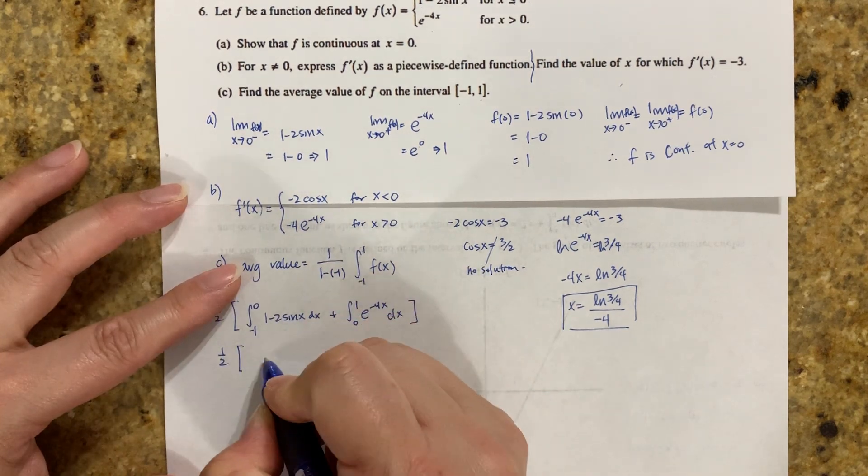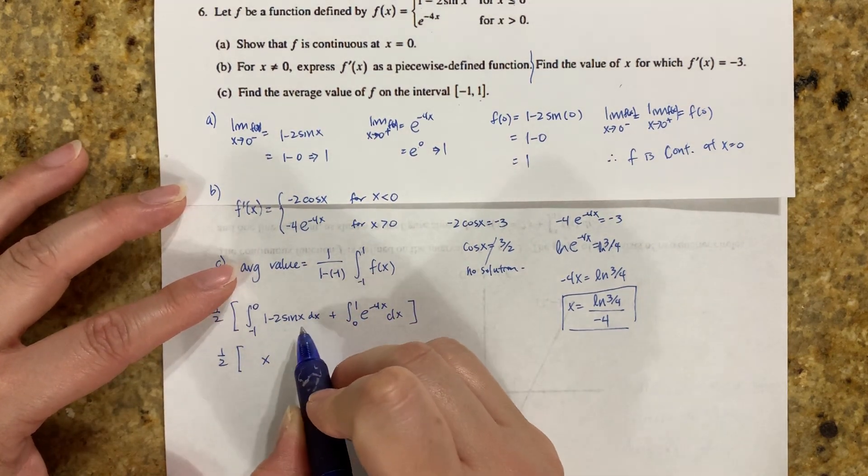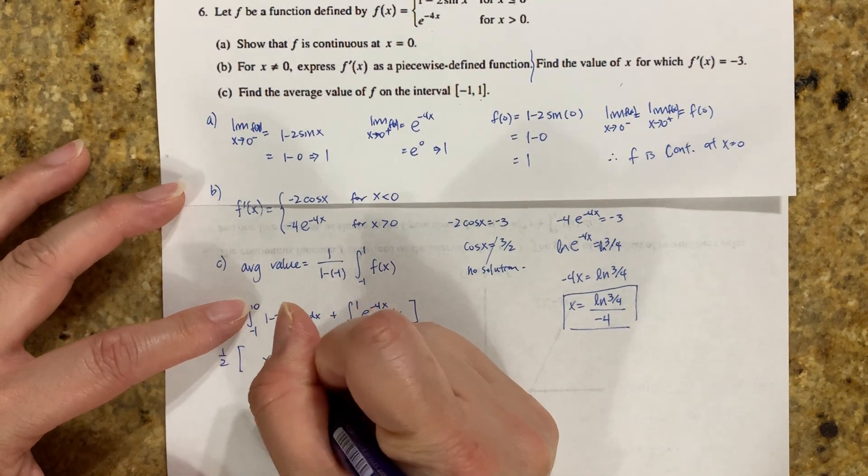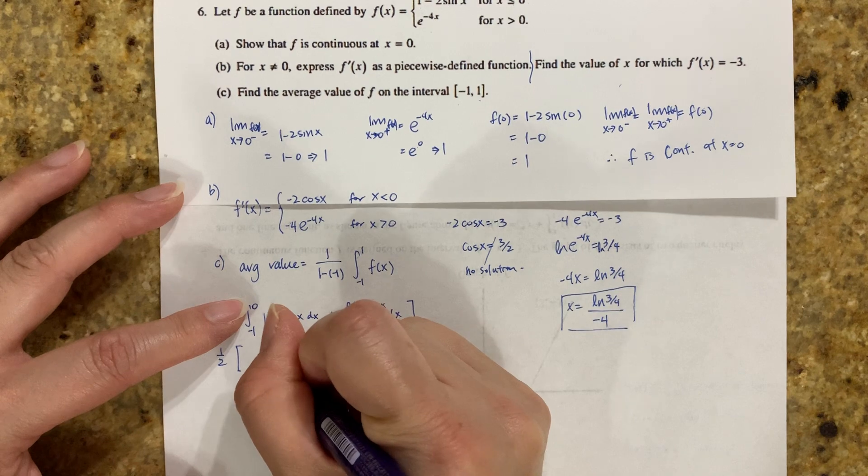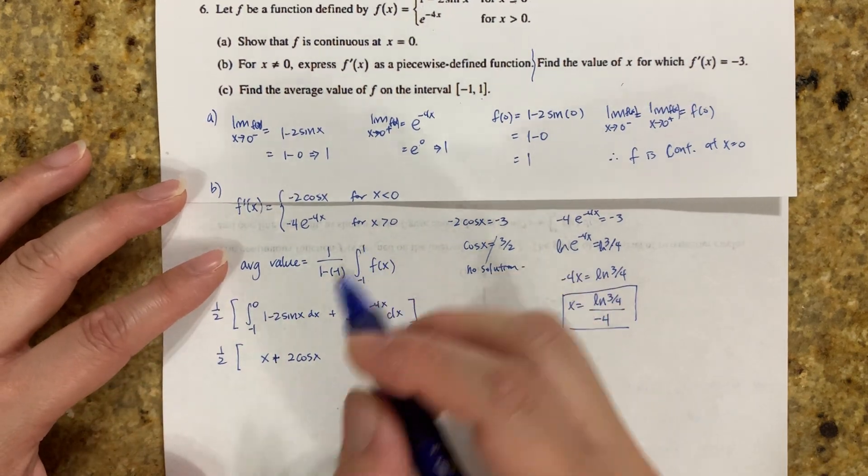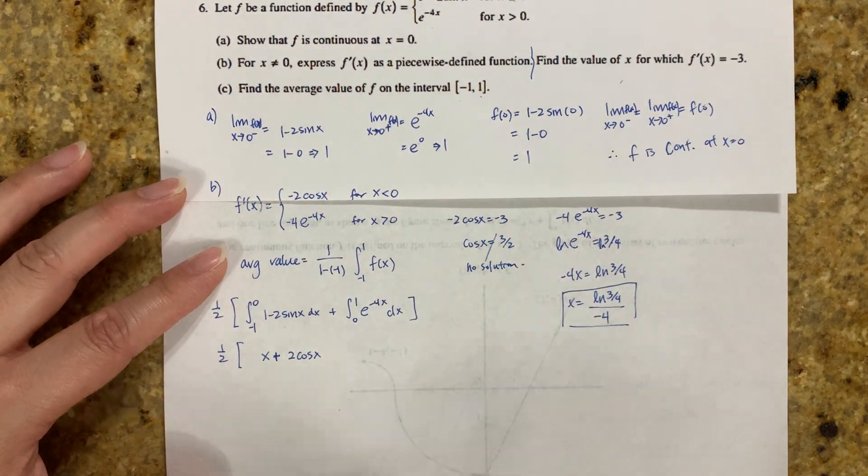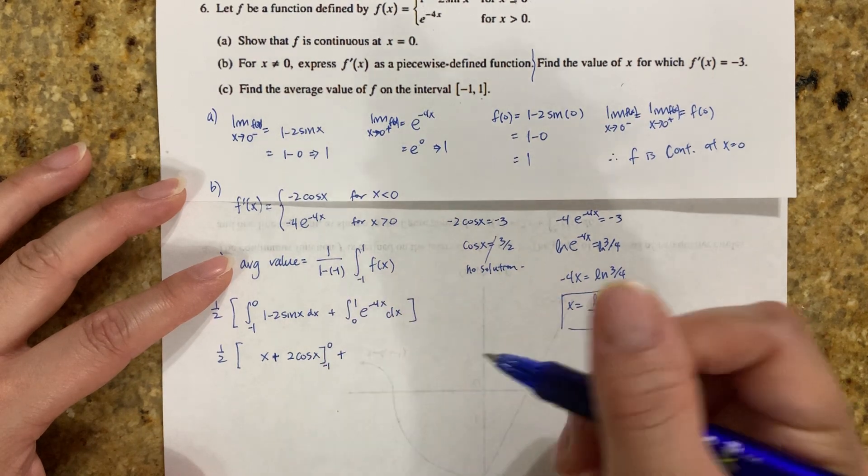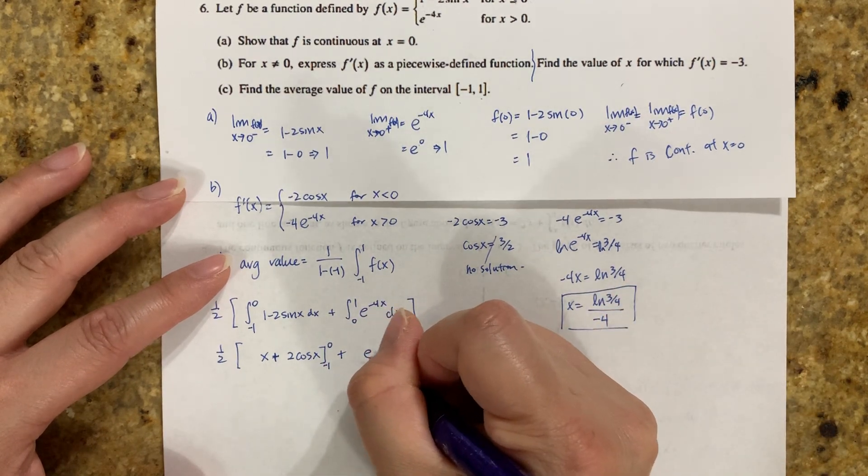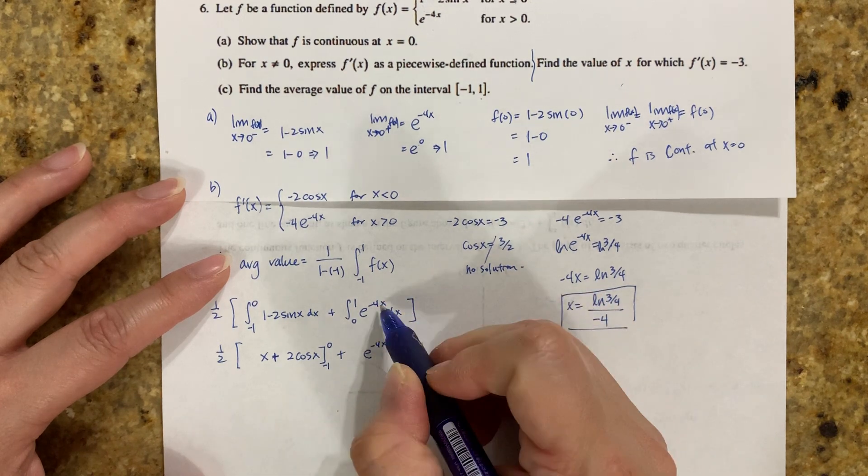Let's take the antiderivative. You get x plus 2cos(x) because the antiderivative of sine x is -cos(x), so that cancels out the negative. Then e^(-4x) gives e^(-4x).